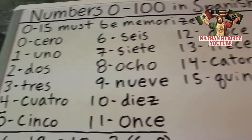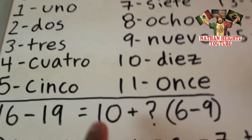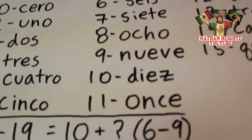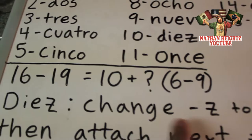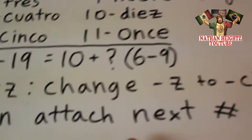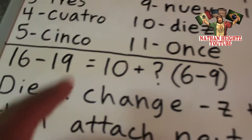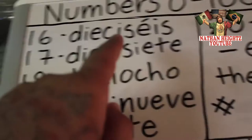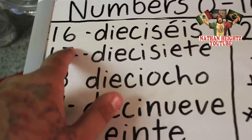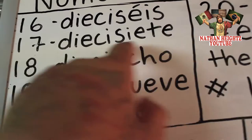Once you hit 15, the next number 16 is going to be a combination of the number 10 plus a number 6 through 9. But first you've got to make a little change to the number 10. What you're going to do is take 10, change the Z ending to CI, and then attach the next number to form one long word. So as you can see right here, we took out the Z, added CI, and then attached 6. So 16, 17, 18, 19, and then 20.